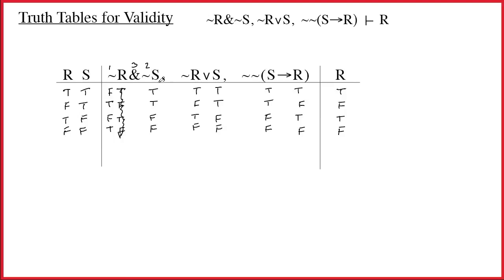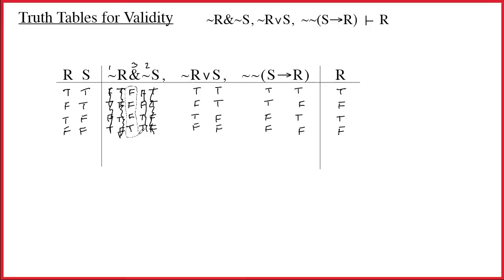Now we work on the tilde in front of S. True-true-false-false becomes false-false-true-true. Cross off what we just used. Now the ampersand: the rule says you get a true output if and only if both inputs are true. False-and-false is false, true-and-false is false, false-and-true is false, true-and-true is true. Circle the ampersand — that's the main connective and the result for the first premise.